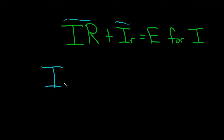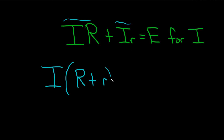So big I, parentheses — to figure out what goes here, you look at the I and ask what's missing. What do I need to multiply I by in order to get I·R? Well, just an R. And then plus — same thing here. You look at the I and I times little r. What's missing? You're missing little r. Always do a mental check: I times big R is I times big R, I times little r is I times little r. And this is equal to E.